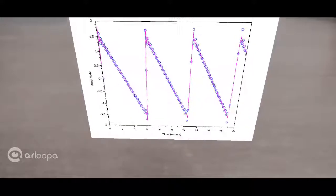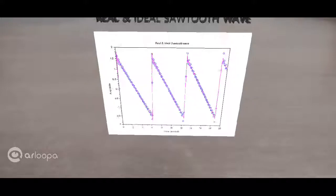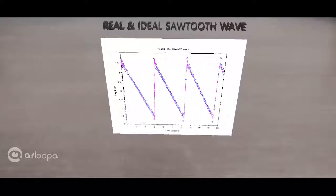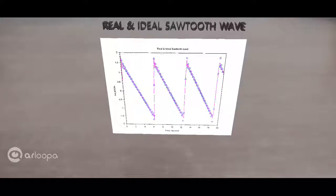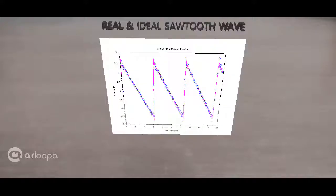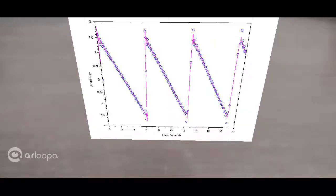the blue circles are the real sawtooth wave and the magenta line is the ideal sawtooth wave. As we observe here, the real sawtooth wave traces out pretty much accurately the ideal sawtooth wave except at the regions of the transition, the region where the sawtooth wave rises rapidly to the peak and then falls down. In that region,